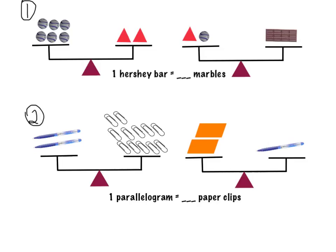Here are your two quiz questions for tonight. On the second pan balance, you want to figure out what you need to know and what you need to figure out on the first pan balance. For the first question, we're trying to figure out one Hershey bar is equal to how many marbles. On the second problem, we're trying to figure out one parallelogram is equal to how many paperclips.